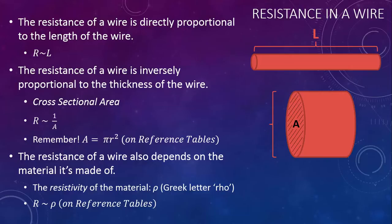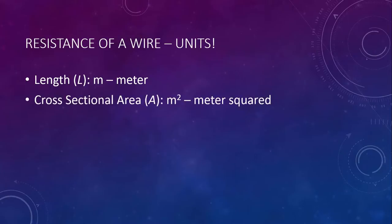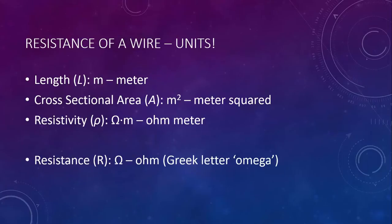If we put those relationships together to get an equation, we end up with R, the resistance, equals rho L over A. Let's take a quick look at the units for all of these quantities. Length, as you might suspect, is measured in meters. The cross-sectional area is meters squared. Resistivity is measured in ohm meters. And when you put all those together, resistance is measured in ohms. That symbol is the Greek letter omega.